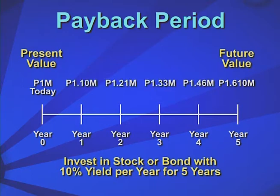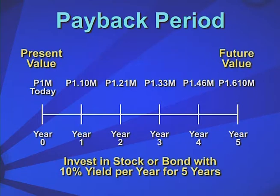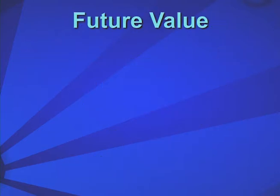Let's look at the numbers. There is therefore a time value of money. Depending on the yield expectations of the entrepreneur, the present value of money would have a future value equivalent to the present value of the money compounded over the future years of the expected value of return or investment yield. This can be converted into a formula.